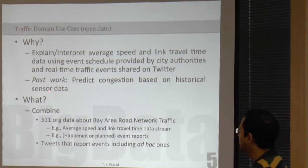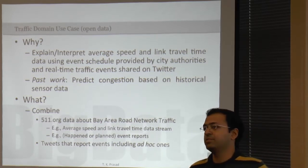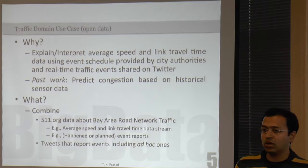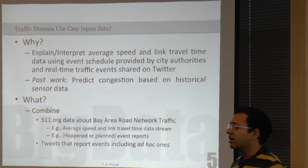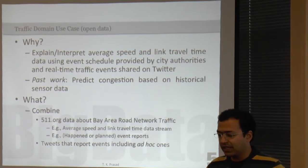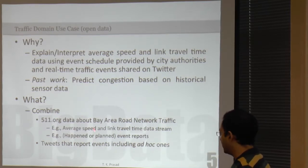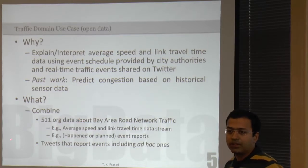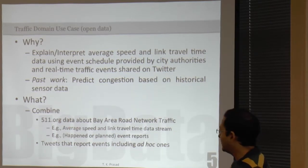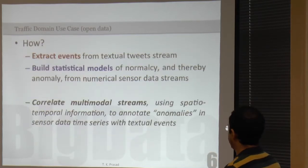Going to the traffic domain, there is a lot of related work on predicting congestion using traffic sensor data. But my focus is more on interpretation — understanding the root cause. Why is there a traffic jam? Not on prediction per se, though the models we are building can also be used for prediction. We are combining 511.org and Twitter as two sources of information, and in both we can look at textual data and sensor data — those are the high-level separations between the types of data.